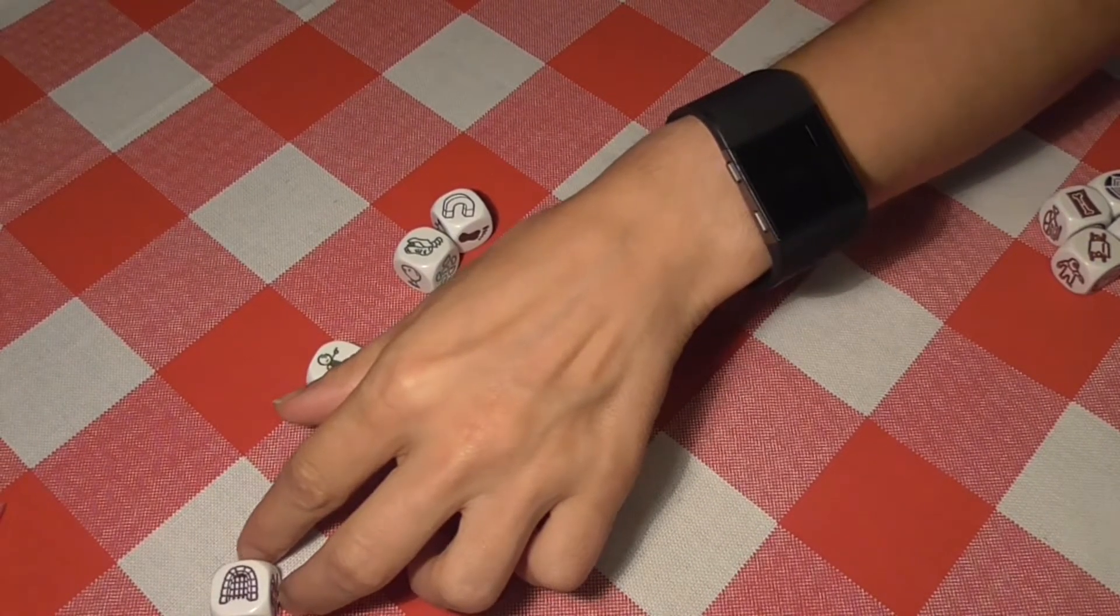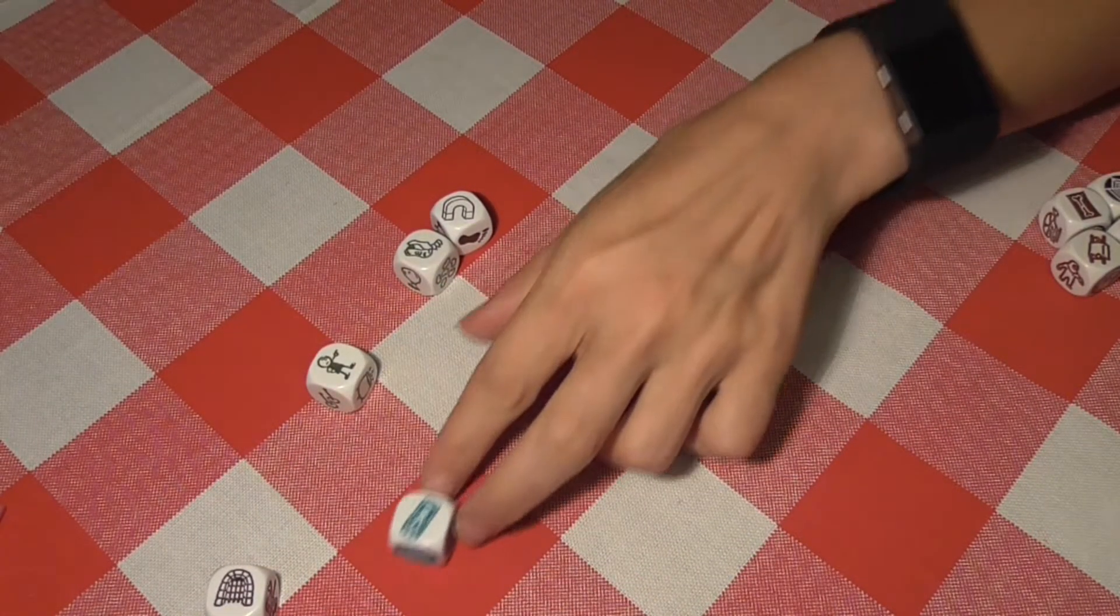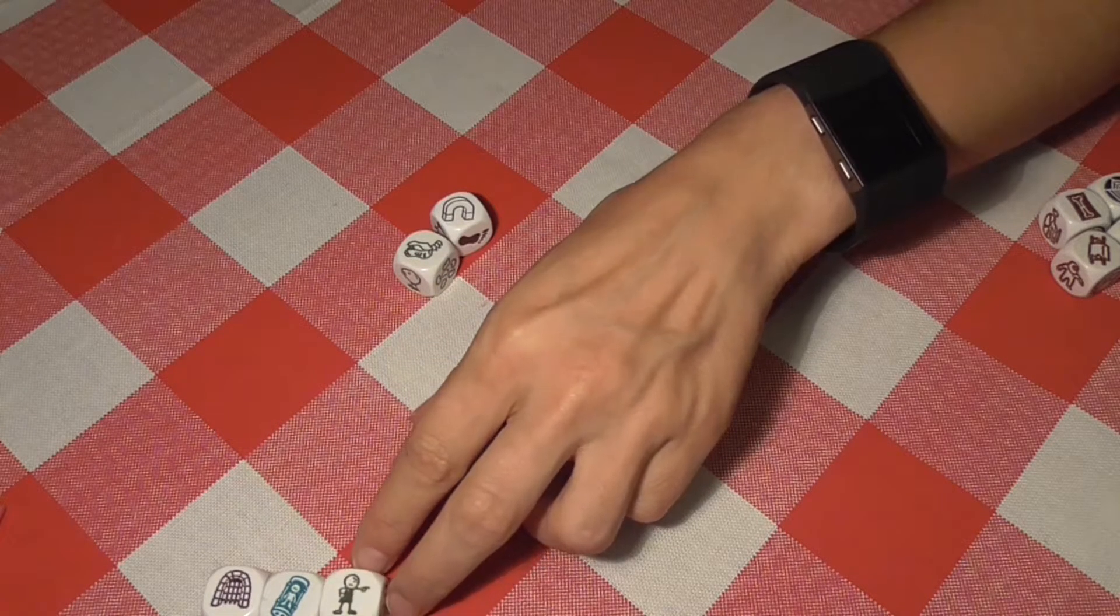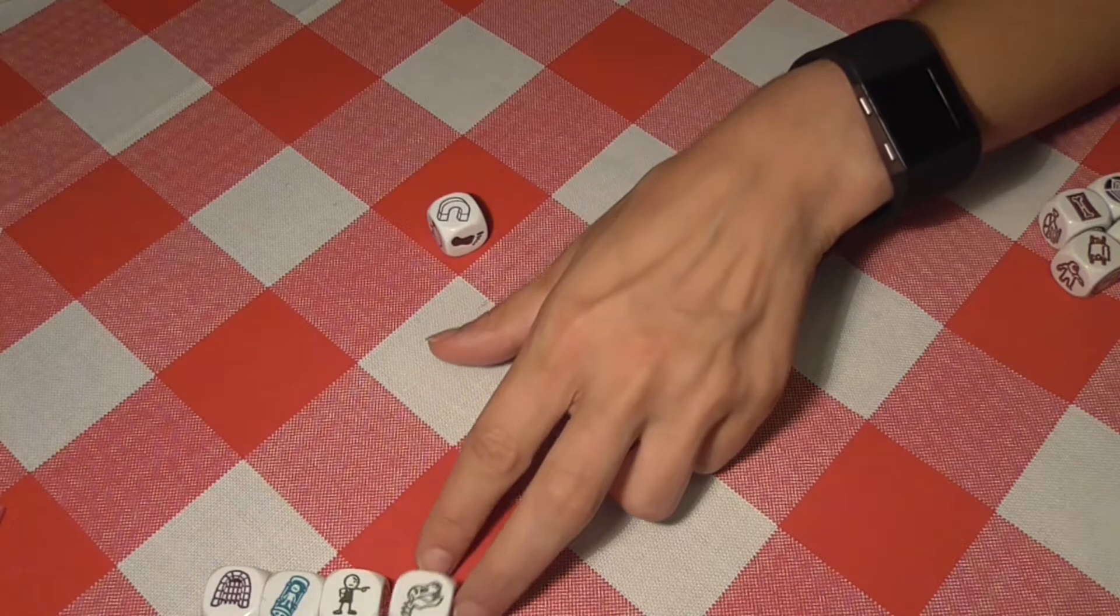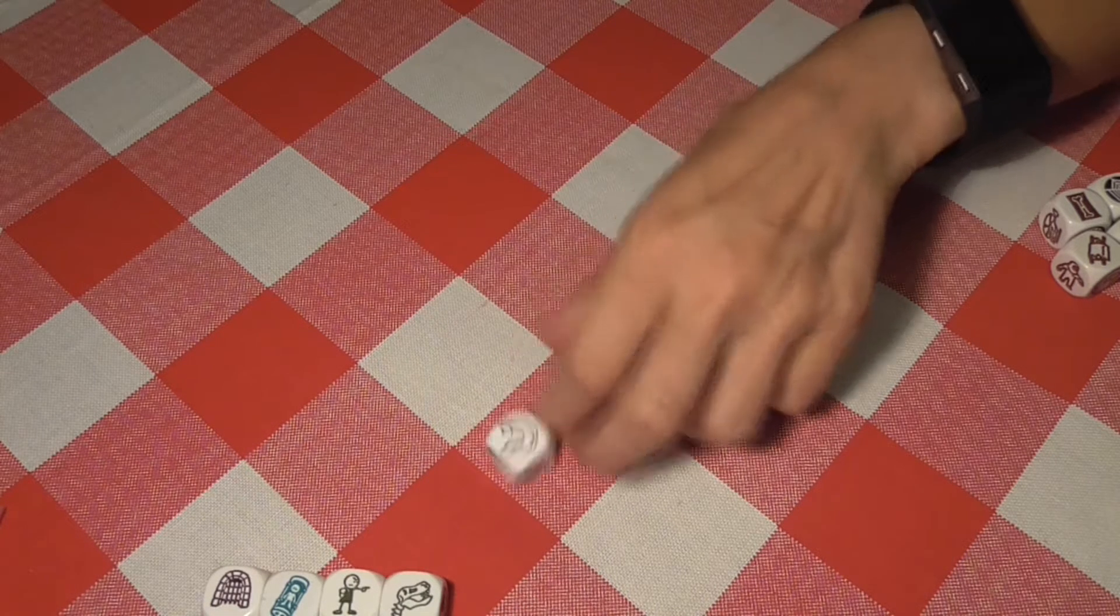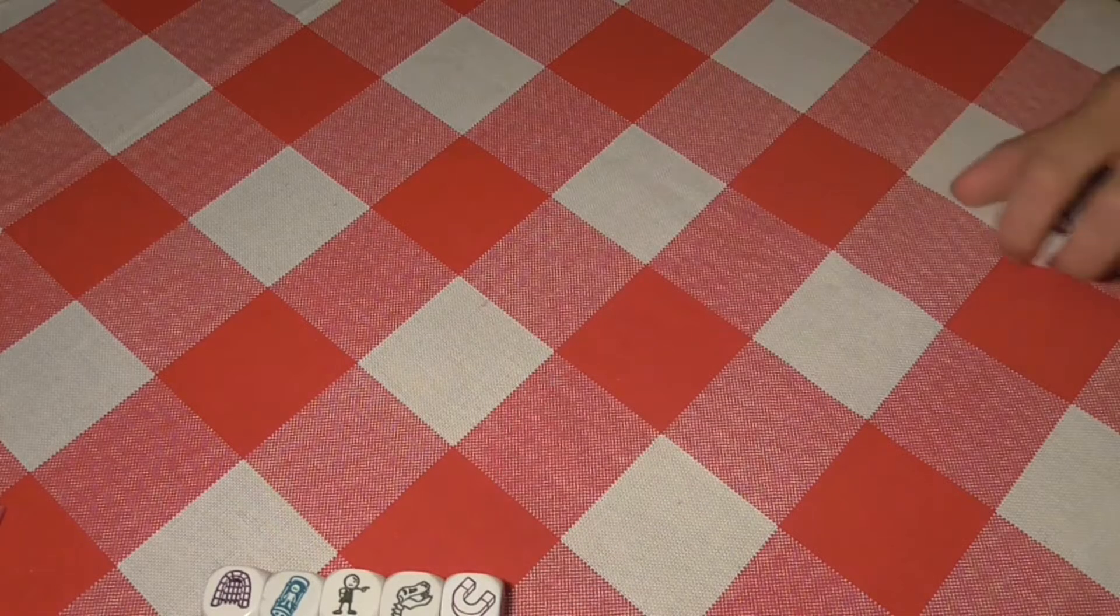A portcullis, is that what it's called? It's a gate in any case. Guy in a tube. Someone pointing, accusingly. Dinosaur bones, or a skeleton, skeletal dinosaur of some sort. Magnets. Goes over here. There you go. Next four.